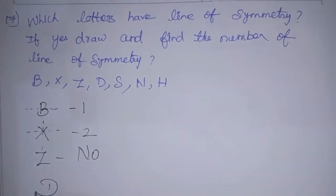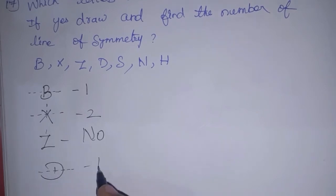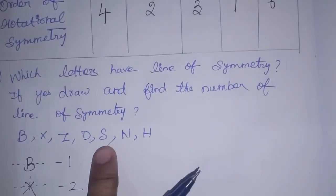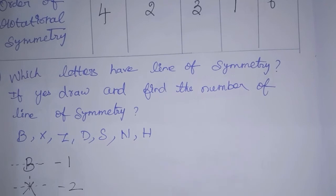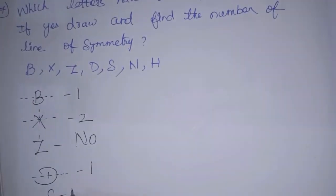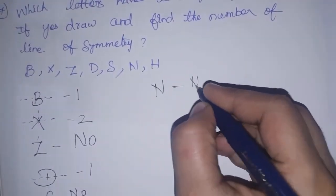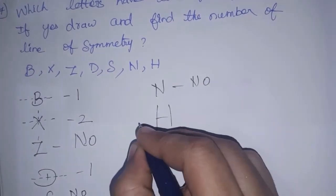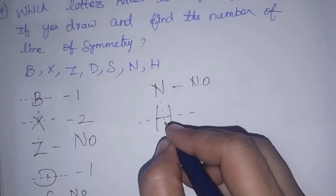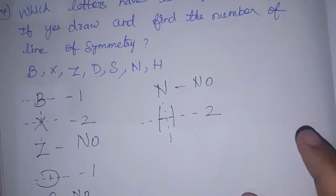Next, D — you can draw one line of symmetry. O — yes, you can draw it. H — you can draw two lines of symmetry: one vertical and one horizontal. So H has two lines of symmetry.